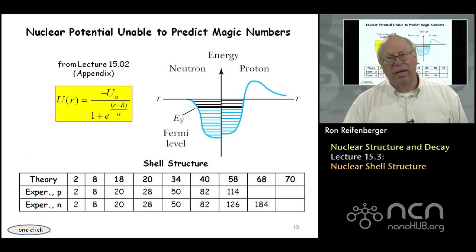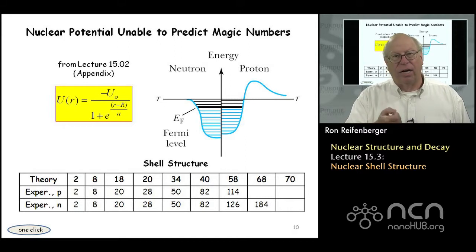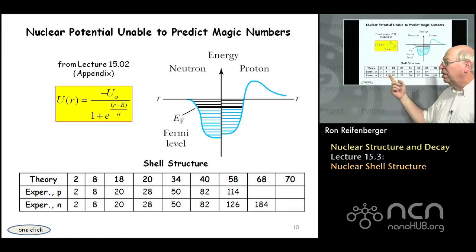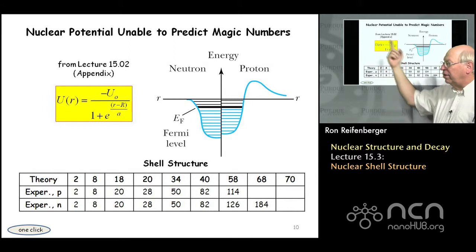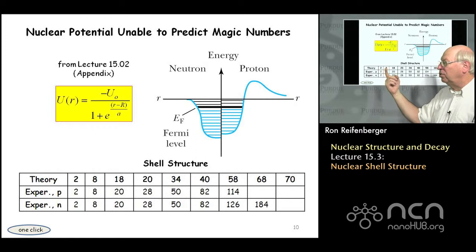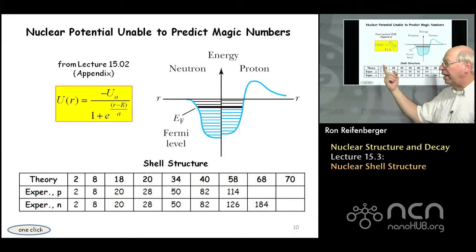If we take the quantum numbers derived for electrons in atoms and apply a similar model to nucleons, it turns out we can do a reasonable job of reproducing the first few magic numbers. Using a simple interaction potential model, we would theoretically expect very stable nuclei when the number of nucleons is 2, 8, 18, 20, 34, and 40. Experimentally, we get pretty good agreement for the first two magic numbers of 2 and 8, and a slight disagreement with the magic number 18.